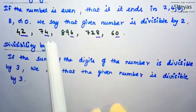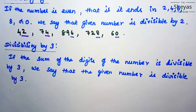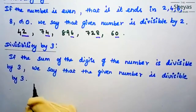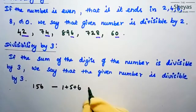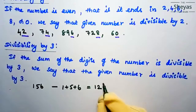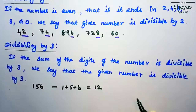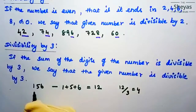Next, divisibility by 3: if the sum of the digits of the number is divisible by 3, we say that the given number is divisible by 3. Let us take the example 156. The sum of the digits is 1 plus 5 plus 6 equals 12. Since 12 is divisible by 3 (as 4 times 3 is 12), we can conclude that 156 is divisible by 3.